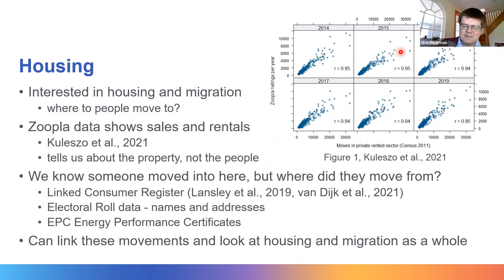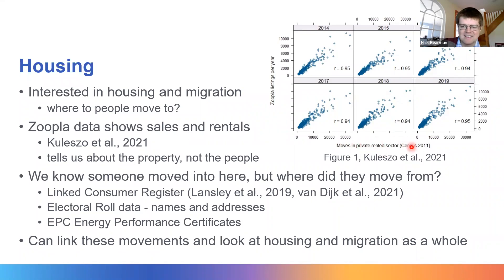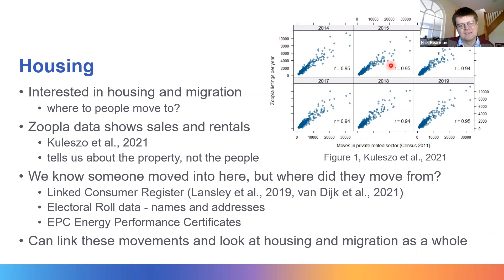There are interesting comparisons of Zoopla data on the y-axis against moves in the private rented sector from census data on the x-axis across different years, and the correlation is pretty good. This suggests the Zoopla data is fairly representative of whole-population data from the census.